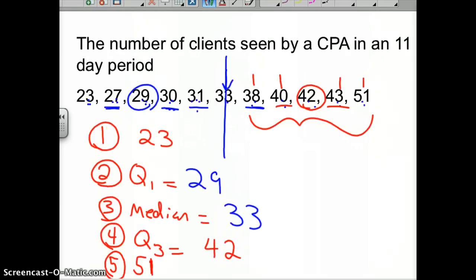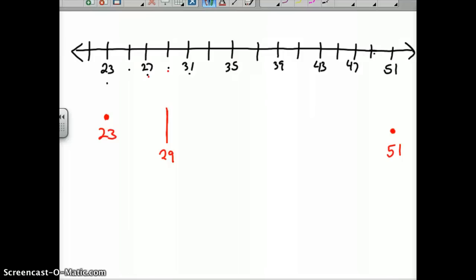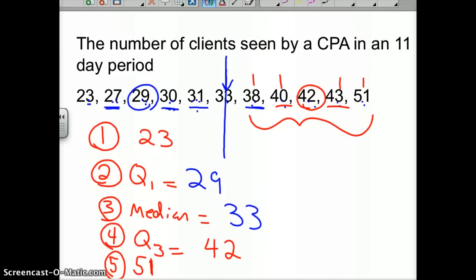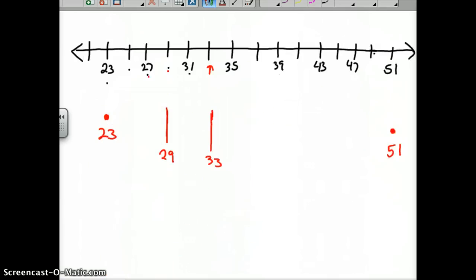We'll mark the first quartile, which is 29. 27 is here, 28, 29 is there. We mark it with a line straight up and down, and I'll call that 29 as your first quartile. We find your median, and our median is 33. 31, 32, 33 would be right here. We'll draw a line directly under that one and label it 33.